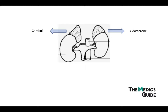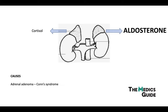Primary aldosteronism, also known as primary hyperaldosteronism, refers to the excess production of the hormone aldosterone from the adrenal glands. This is caused by two main things: either an adrenal adenoma — which we call Conn's syndrome, accounting for 80% of all cases — or adrenal hyperplasia. It's important to make this distinction because the treatment for both is slightly different.